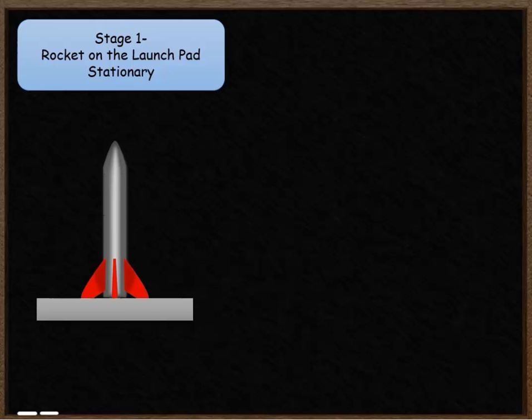So the first stage of our rocket's journey is it being stationary on the launch pad. When it's stationary on the launch pad there is a downwards force pulling it towards the Earth. That downwards force is gravity.